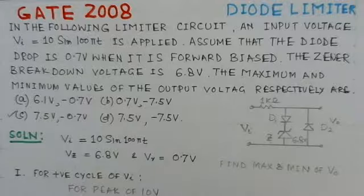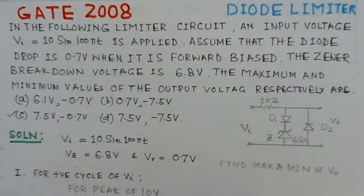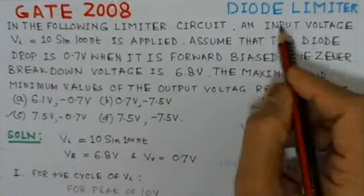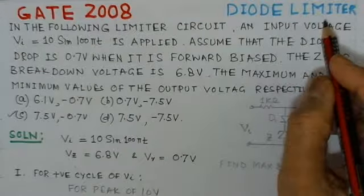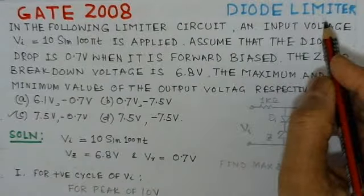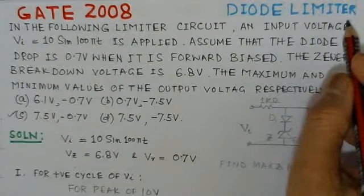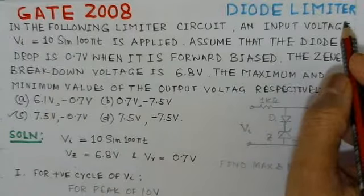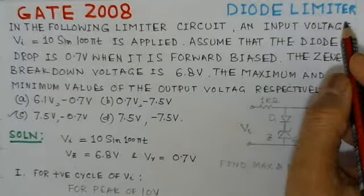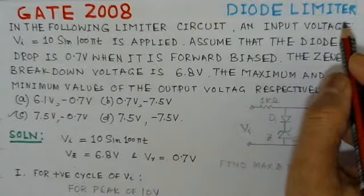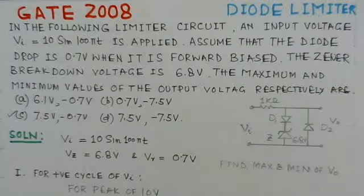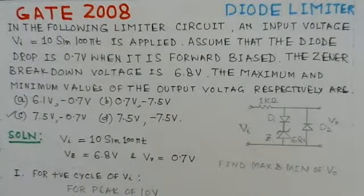The present video solution is for a GATE 2008 problem. It is a problem on diode limiters. Probably that is the only problem I could find in GATE papers. So we have tried to include it here. This is a very simple problem of one mark only.